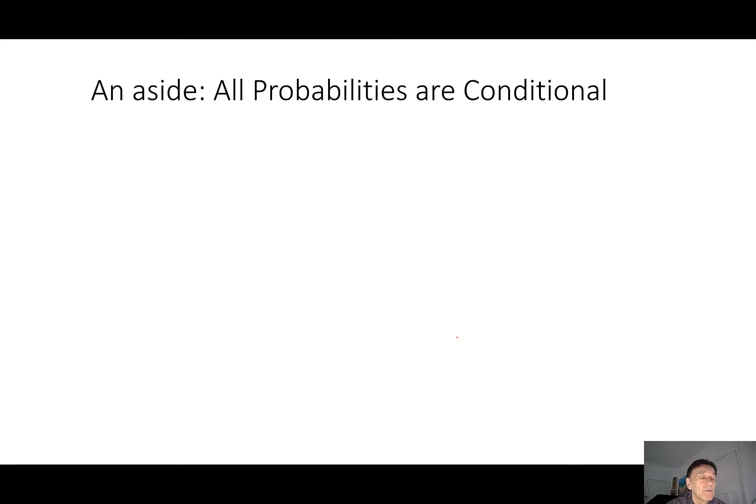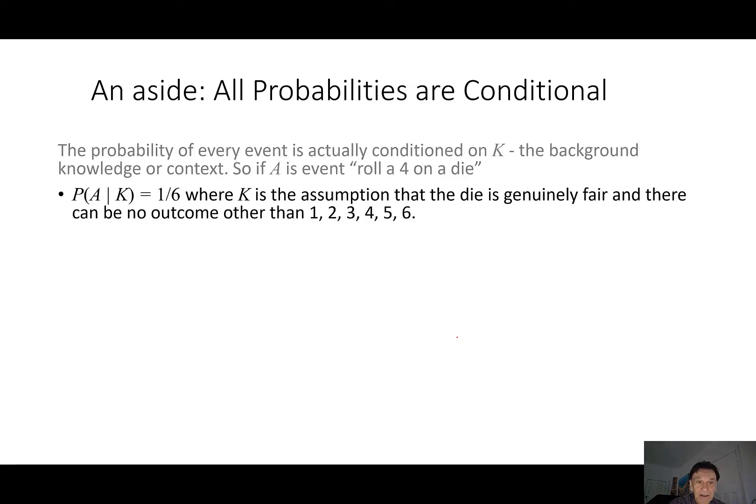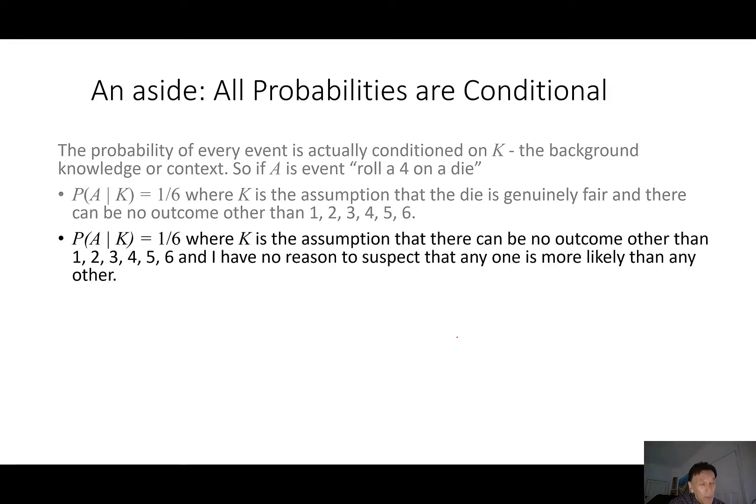Now, kind of like an aside here, all probabilities are conditional. The probability of every event is actually conditioned on some background knowledge or context. So if a is the event roll a 4 on a die, then the probability of a is 1/6 if the background information is that the die is generally fair and there can be no outcome other than 1, 2, 3, 4, 5, 6. We might also say that the probability of a given k is 1/6 if the assumption for the background is that there's no outcome other than 1, 2, 3, 4, 5, 6 and I have no reason to suspect that any one is more likely than any other.